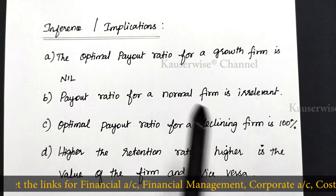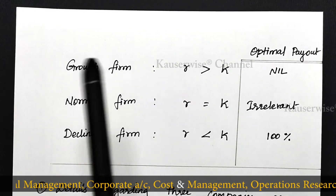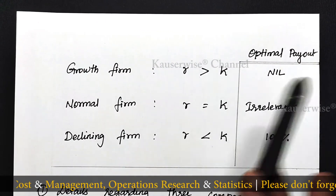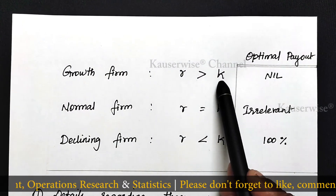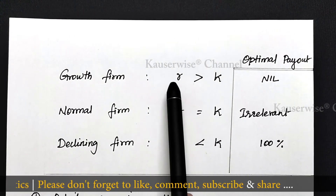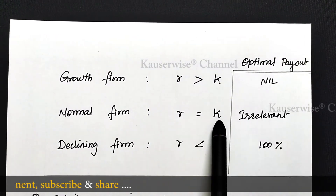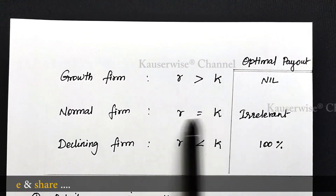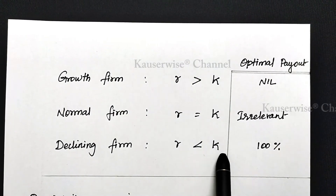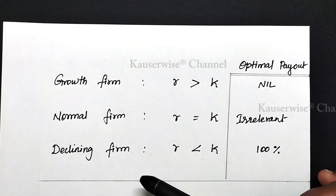Now let us see what is a growth firm, normal firm, and declining firm, and how to determine the optimum payout for these three different firms. In order to determine the firm type, you should compare R and K — where R refers to rate of return and K refers to cost of capital. If R is greater than K, that is, the return on investment is greater than cost of capital, then the firm is a growth firm. If R is equal to K, then the company is called a normal firm. If R is lesser than K, then the firm is called a declining firm.